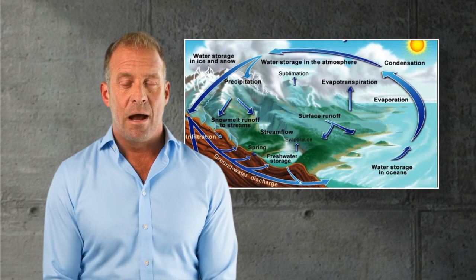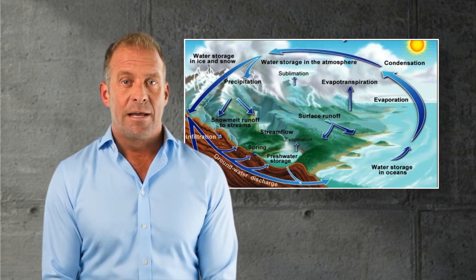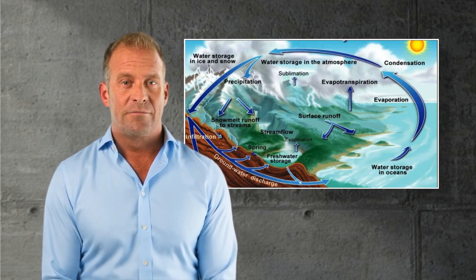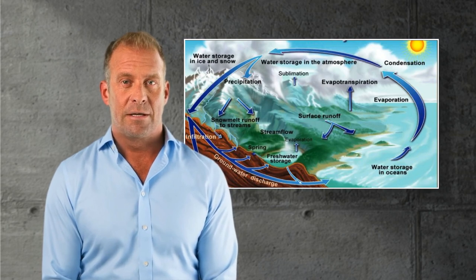The water cycle, powered by the sun and gravity, is nature's way of distributing water across these reservoirs. Water evaporates, forms clouds, and returns as rain or snow, continually moving from one place to another.